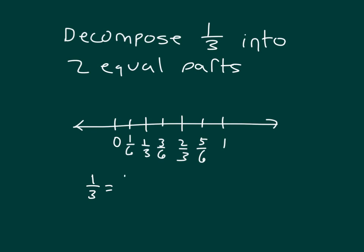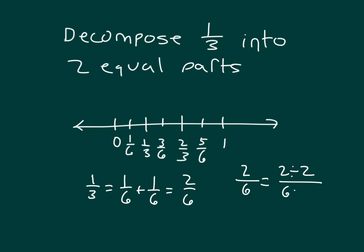1 third does equal 1 sixth plus 1 sixth, which equals 2 sixths. So we had 2 sixths, and I can use division: 2 divided by 2 and 6 divided by 2. 2 divided by 2 is 1, and 6 divided by 2 is 3.